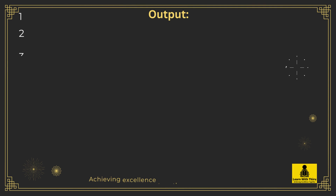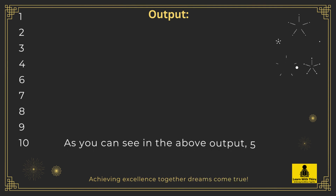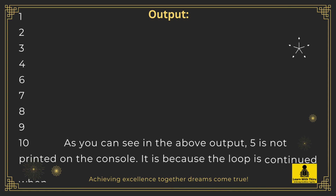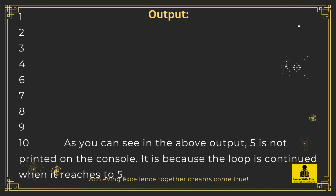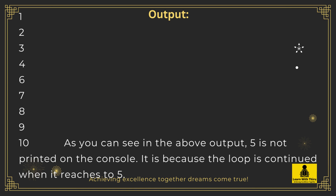Output: 1 2 3 4 6 7 8 9 10. As you can see in the above output, 5 is not printed on the console. This is because the loop is continued when it reaches 5.